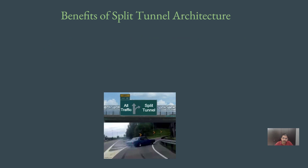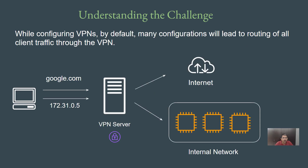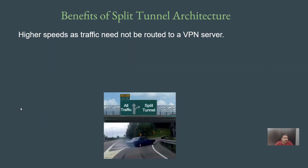Let's look into some of the benefits that split tunnel based architecture provides. One key benefit is higher speeds, as traffic need not be routed to a VPN server. If all traffic is routed through the VPN server even to the internet, it acts as a proxy. Sometimes the VPN server can slow down, and in such cases all your internet traffic will also slow down. Also, the connection from client to VPN is fully encrypted, and with a lot of traffic, encryption can add some slowness. With a split tunnel approach, your traffic goes directly to the internet and you get the maximum bandwidth based on your ISP speed.